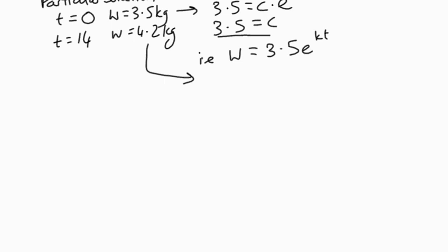In other words we can say that w equals 3.5 times e to the kt. That's our first improved equation. Then we can put in the second set of information, which says that 4.2 equals 3.5 times e to the power 14k, because in this case t is 14 days, two weeks.